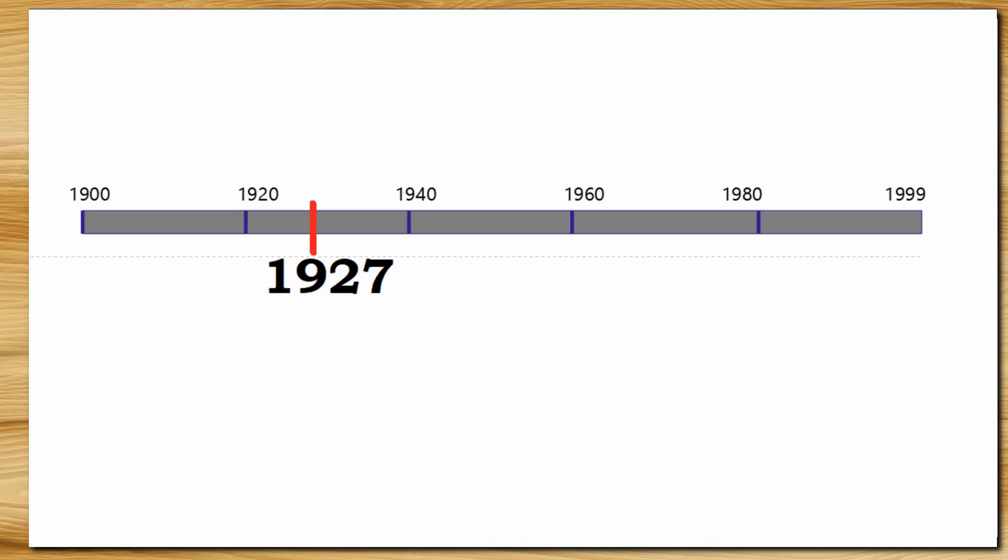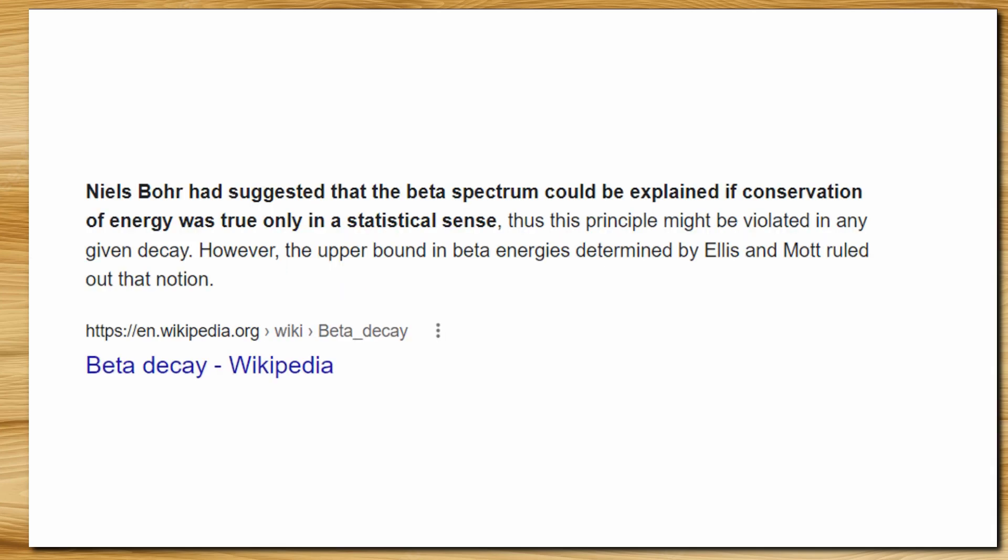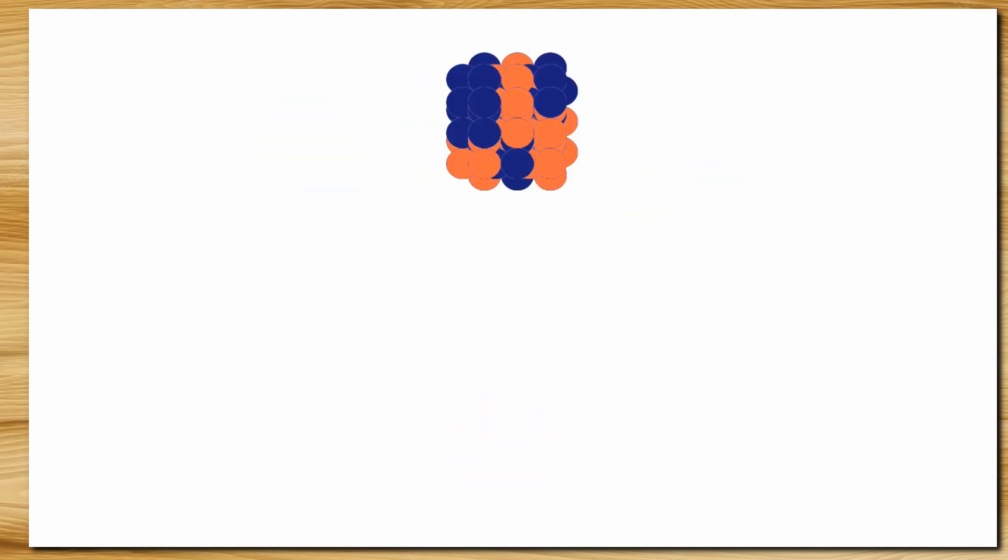The experiments were done in 1927, but where the missing energy is gone couldn't be explained even in the next two years. Niels Bohr, the famous scientist, suggested that energy was not conserved or was conserved in the mean. The debate about a possible violation of a fundamental law of physics remained for years.